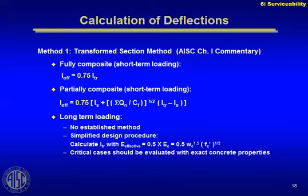I want to talk about the moment of inertia you use when checking deflections in a composite beam, because there are several different ways to go. If you read the commentary to Chapter I in AISC, it talks about various options and makes some suggestions. You need to understand what your computer program does when it calculates the deflection of a composite beam — if you have a live load limit of L/360, for instance, that could become a controlling parameter, and the question is what is your program assuming for the moment of inertia.